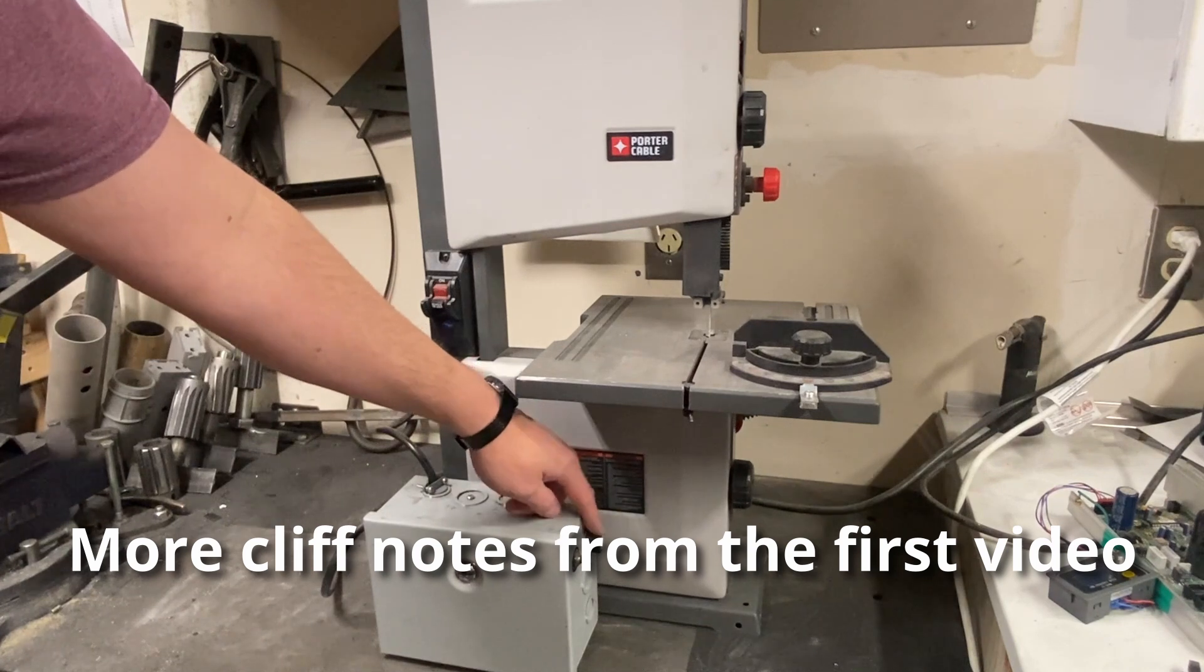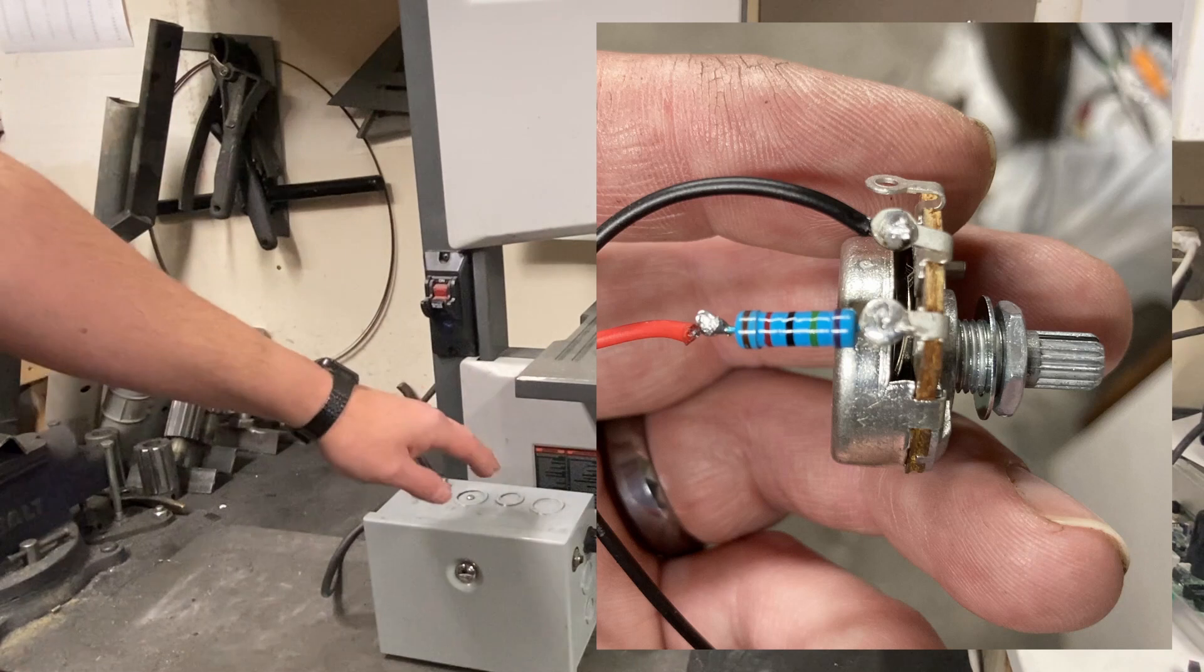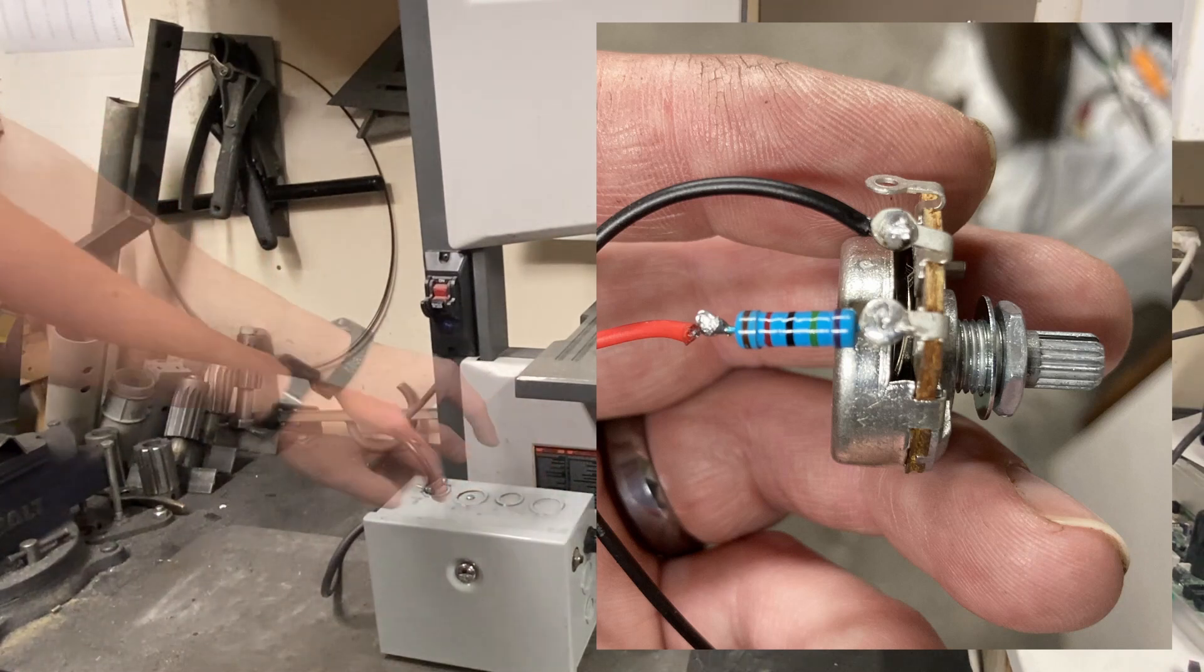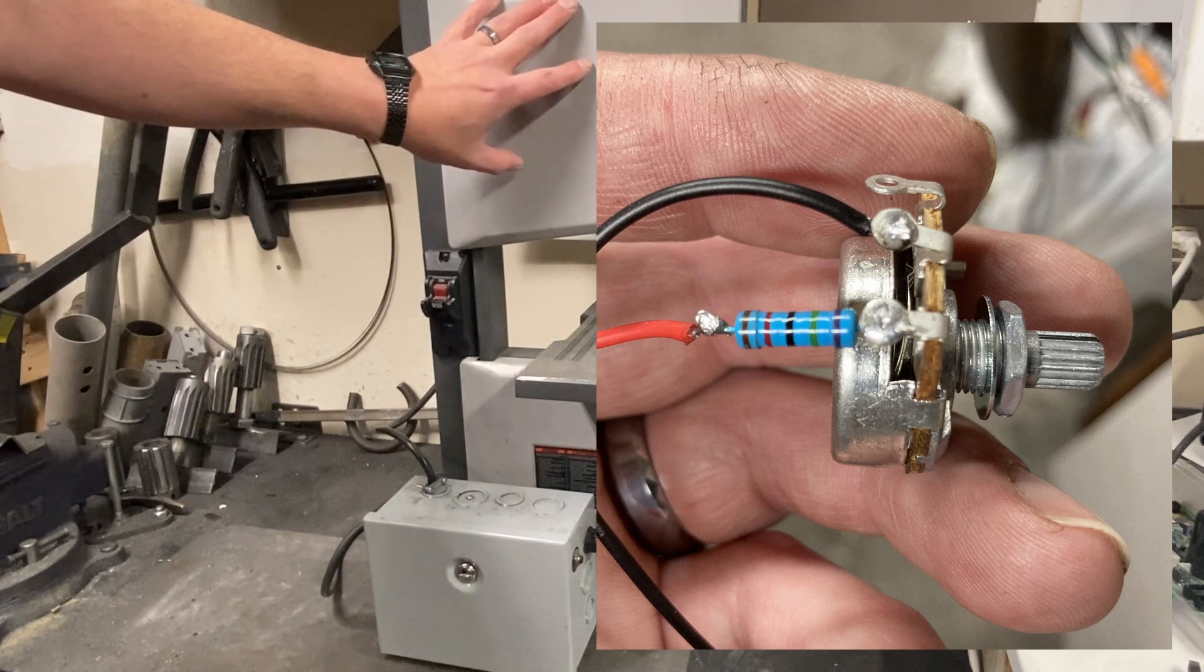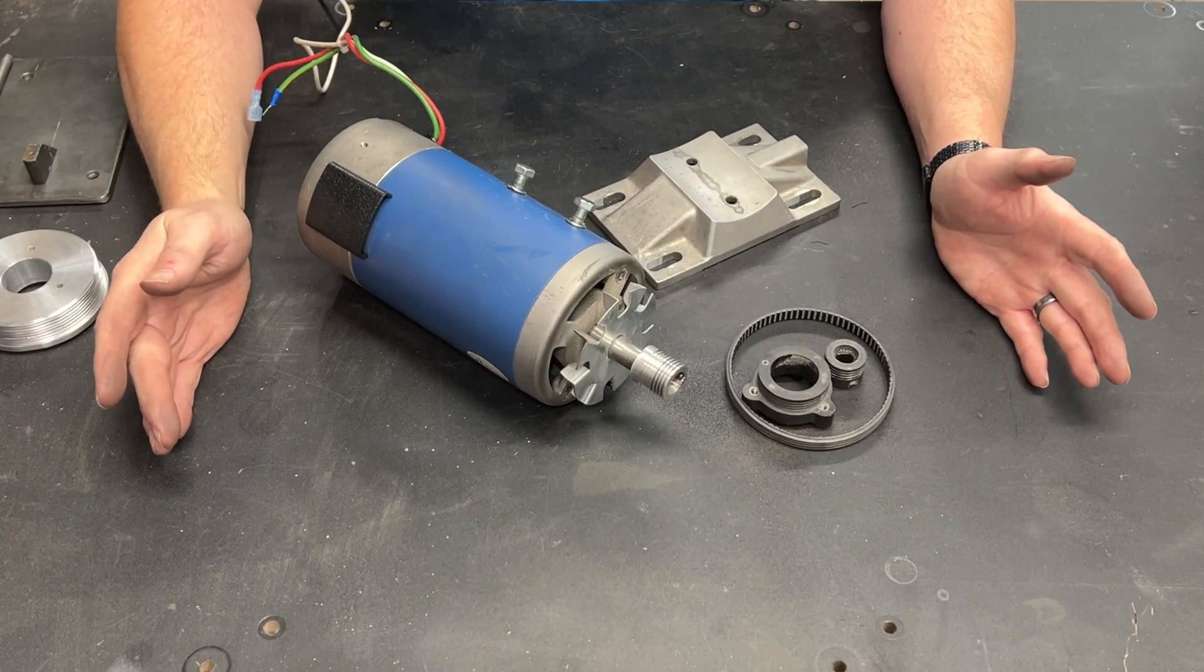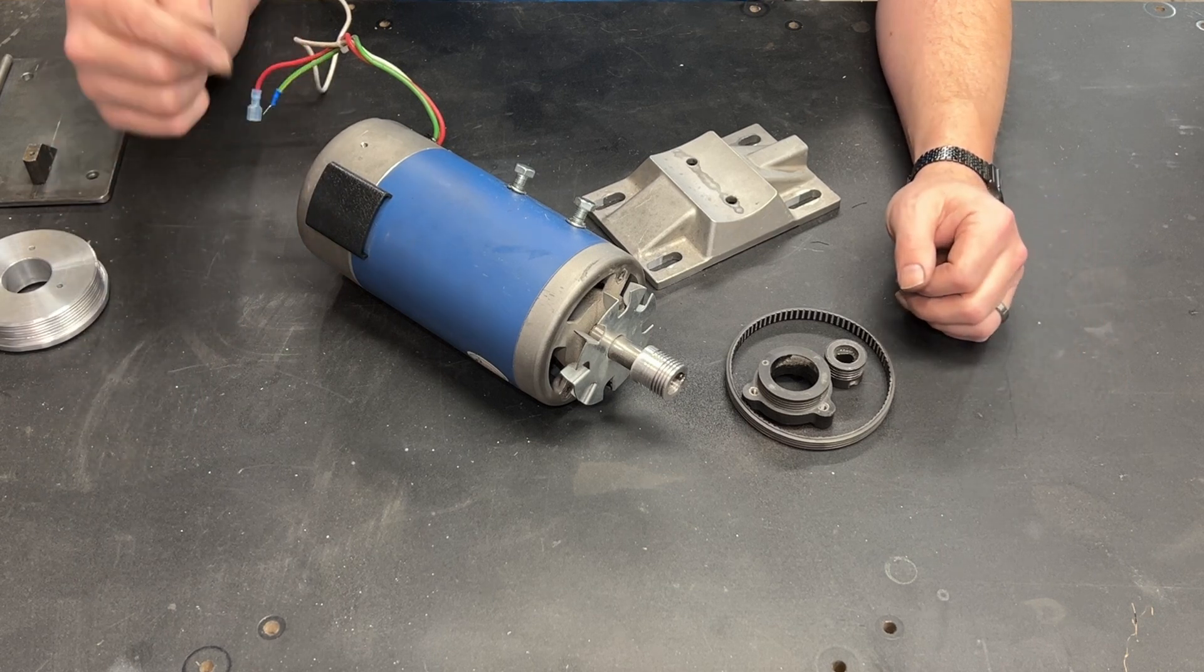When I replaced the potentiometer, I added a resistor in series to the potentiometer and that makes it so that I can never go faster than the max speed that this had before. And while that's an effective way to do it, gearing is so much better.